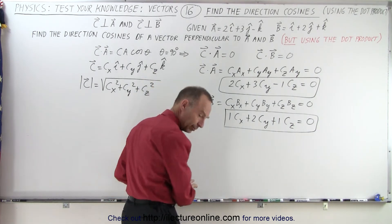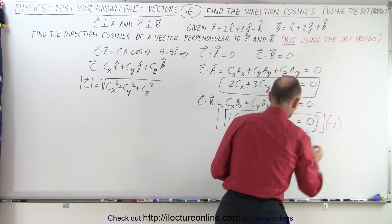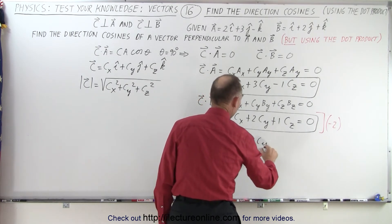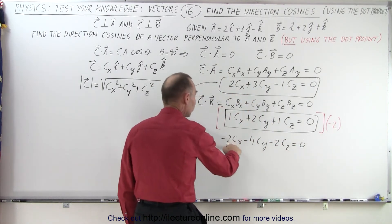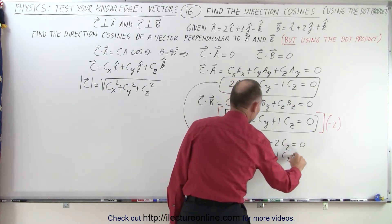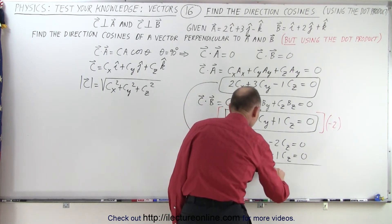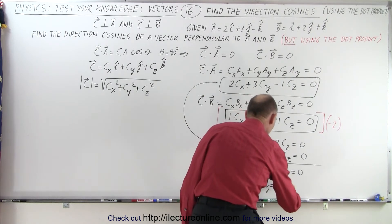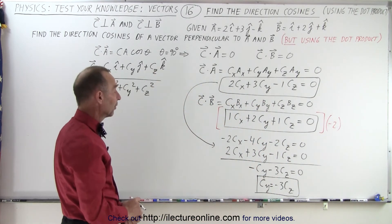I'm going to multiply the bottom equation by negative 2. If I do that, I get negative 2 C sub X minus 4 C sub Y minus 2 C sub Z equals zero. Then if I take this and add it to the first equation — positive 2 C sub X plus 3 C sub Y minus 1 C sub Z equals zero — and add the two together, the C sub X drops out. Here I have minus C sub Y minus 3 C sub Z equals zero. Solving for C sub Y, I get C sub Y equals negative 3 C sub Z.